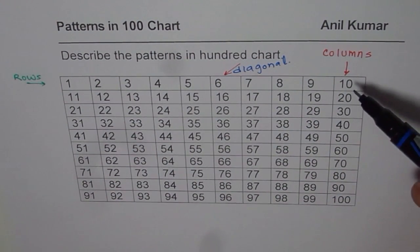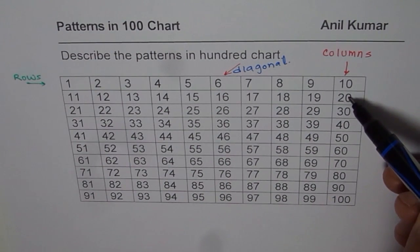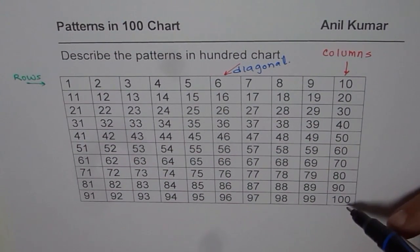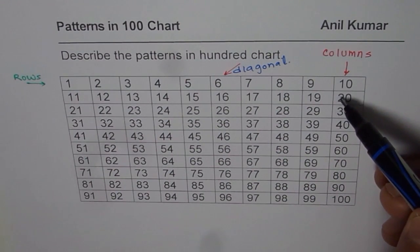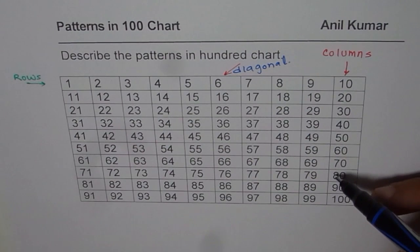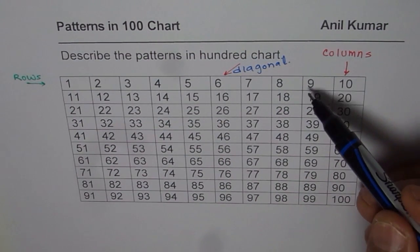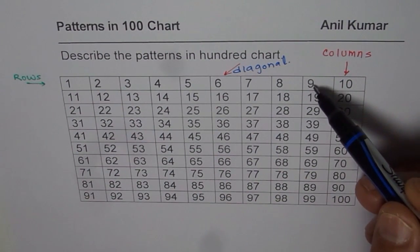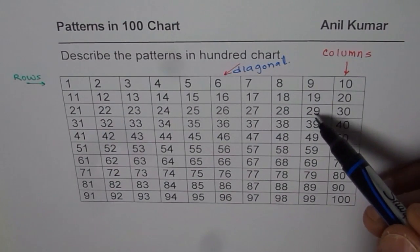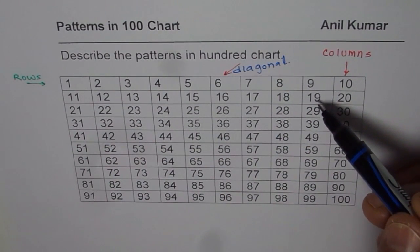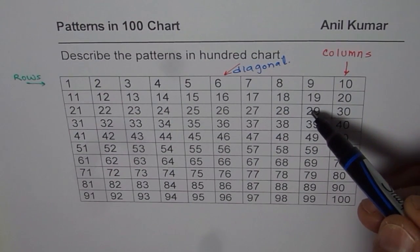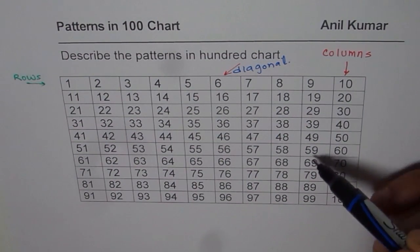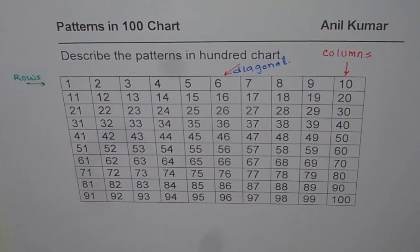One more thing you notice in a column is the ones place digits remain the same — 0, 0, 0, 0... they stay the same. But the tens place increases by 1: 1, 2, 3, 4, 5, 6, 7, 8, 9, 10. So in these columns, the ones place remains the same and the tens place increases by 1 each time as you go down. That is what is meant by adding 10 — when you add 10, the tens place increases by 1.